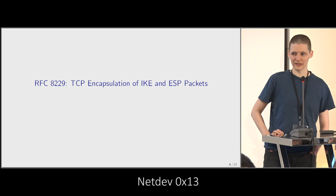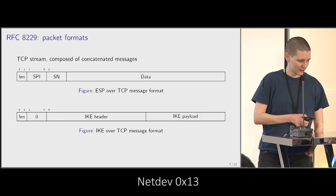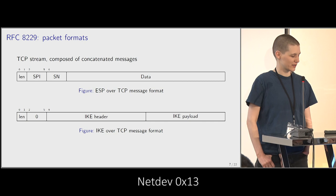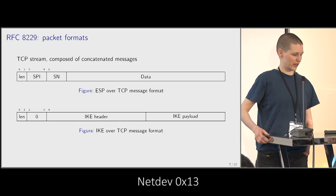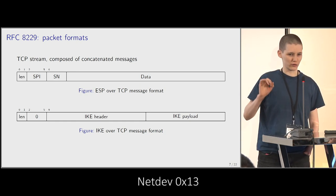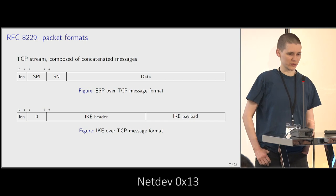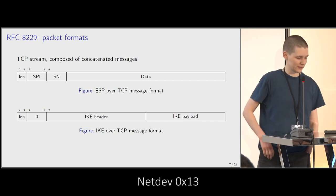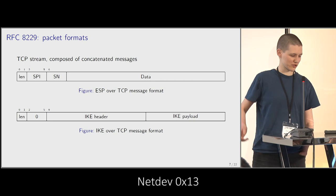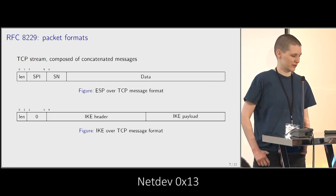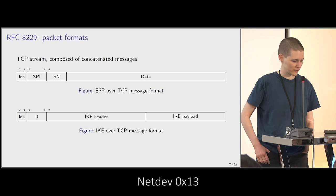That's a standard from about a year and a half ago. What does the TCP stream look like when you're using this RFC? You open your TCP connection to the IKE daemon, and you have your TCP stream where you concatenate one message after the other. Each message starts with a two-byte length field that tells you the full length of the upcoming message. It's pretty much the same format as UDP encapsulation — there's an ESP header starting with the SPI and then the sequence number, and after that comes the encrypted data.